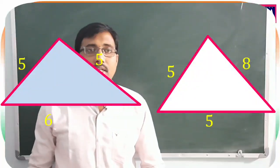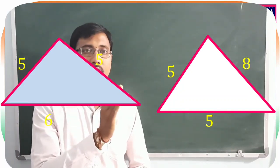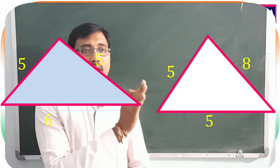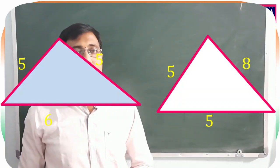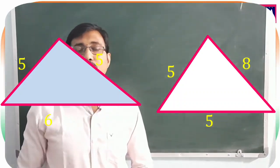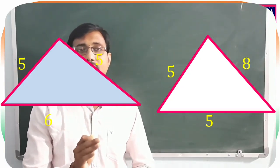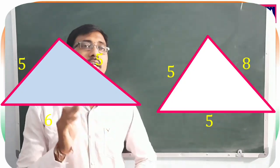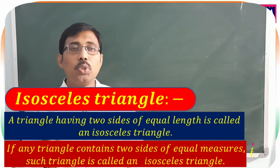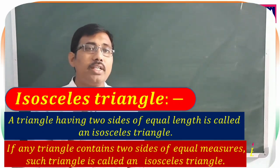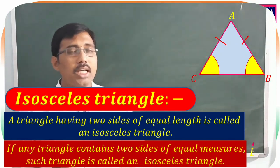Observe the figures. The first triangle has sides 5, 5, and 6 units. The second has sides 5, 5, and 8 units. In both triangles, two side lengths are equal and the third side is different. A triangle having two sides of equal length and one different side is called an isosceles triangle.